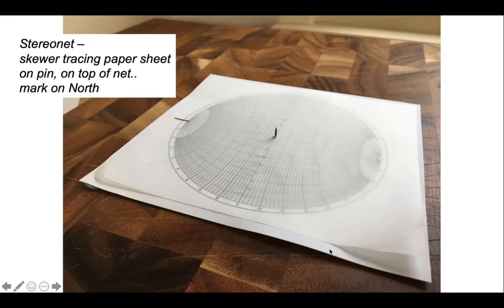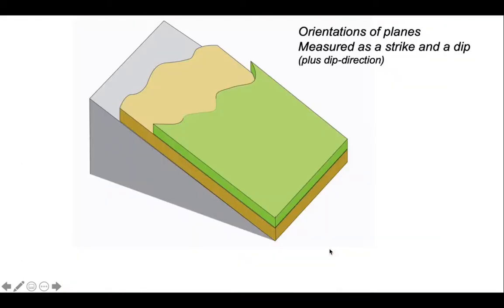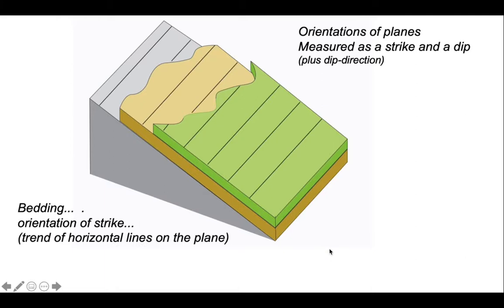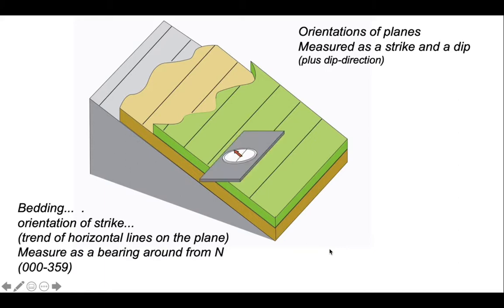Let's remind ourselves about how we record planes. These are measured as a strike and a dip plus a dip direction. Imagine these are bedding planes and these lines here are the orientation of strike, in other words the trend of horizontal lines on the planes. We line up our compass with these horizontal lines, keeping the compass flat, and measure the bearing of a horizontal line on this plane measured relative to north. The value of strike will have a value somewhere between 0 and 359, the bearing points of a compass.